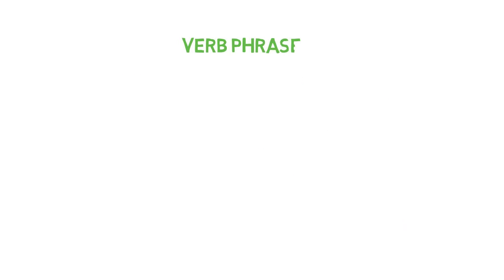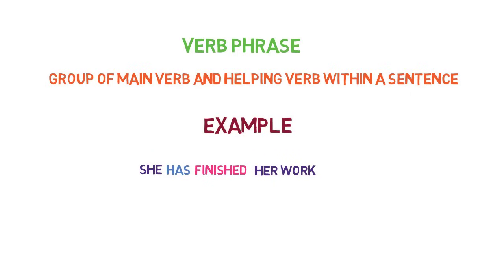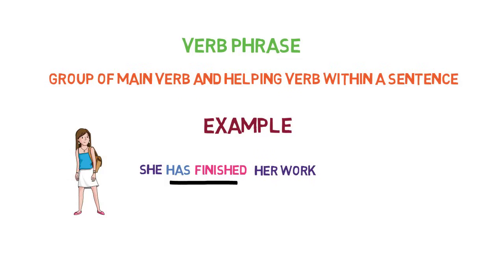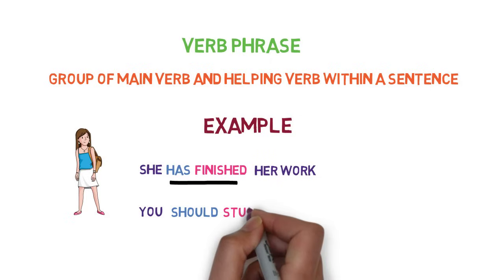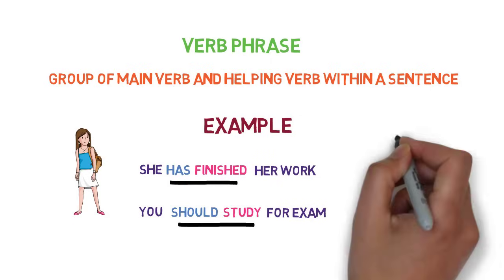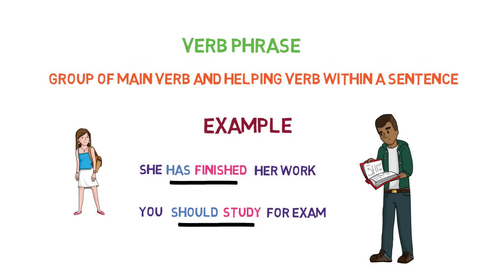Let's see the next type of phrase: verb phrase. A verb phrase is a group of a main verb and a helping verb within a sentence. For example, 'she has finished her work' — here 'has finished' is a verb phrase, as 'finished' is the main verb and 'has' is the helping verb. Another example: 'we should study for the exam' — 'should study' is a verb phrase, as 'study' is the main verb and 'should' is the helping verb.